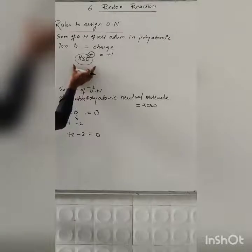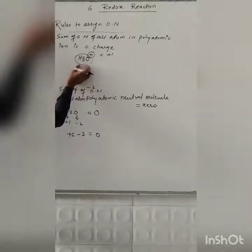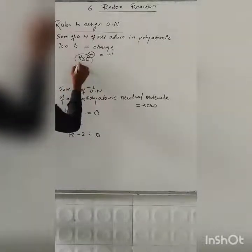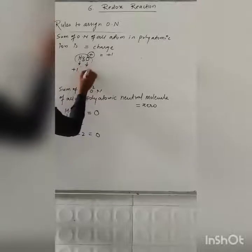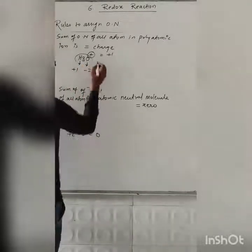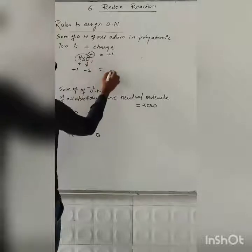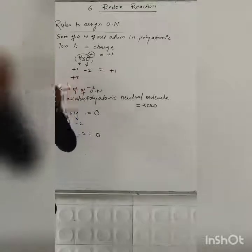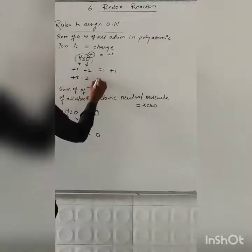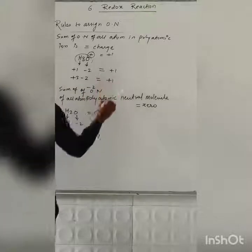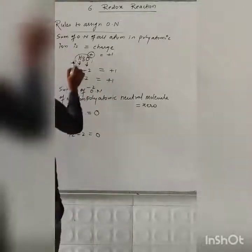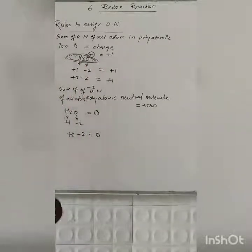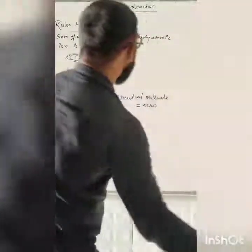So we will calculate the oxidation state of the hydronium ion H₃O⁺. Hydrogen has oxidation state plus 1, oxygen has oxidation state minus 2, and the charge is plus 1. Calculating: 3 × (+1) = +3 for hydrogen, and 1 × (−2) = −2 for oxygen. The sum of oxidation numbers equals the charge of the ion, plus 1. In this way we can find out the oxidation state. Thank you.